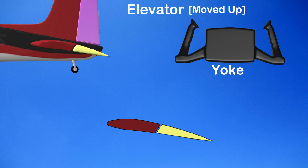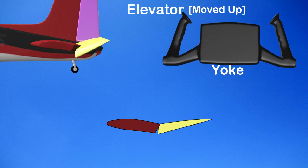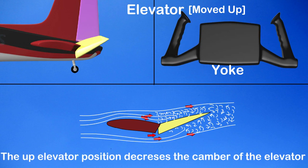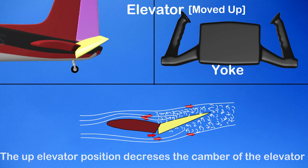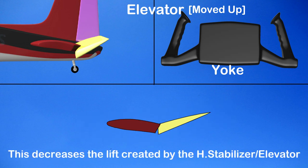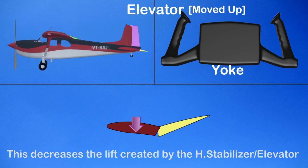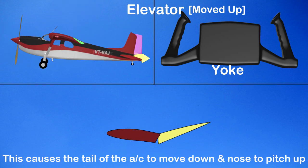To pitch the aircraft nose up, the pilot pulls the yoke aft. The elevator goes up. This decreases the camber and lift created by the horizontal stabilizer and elevator. The decrease in lift causes the tail of the aircraft to move down and the nose to pitch up.